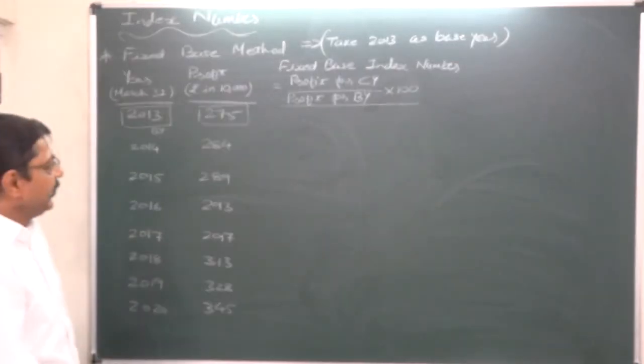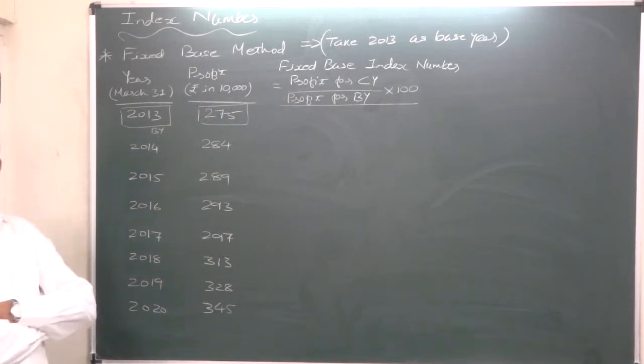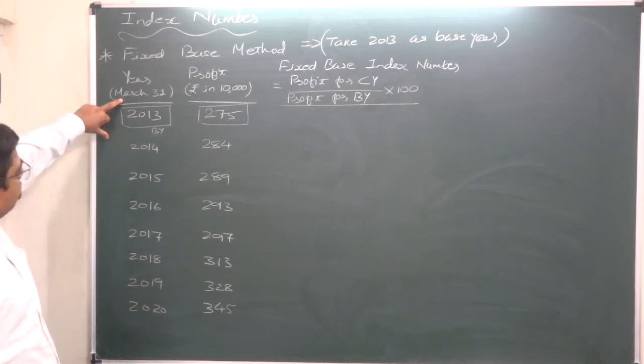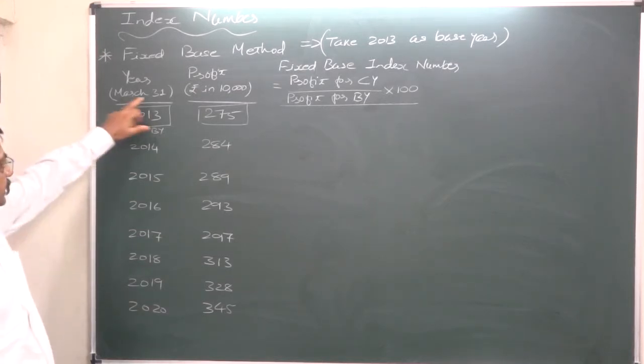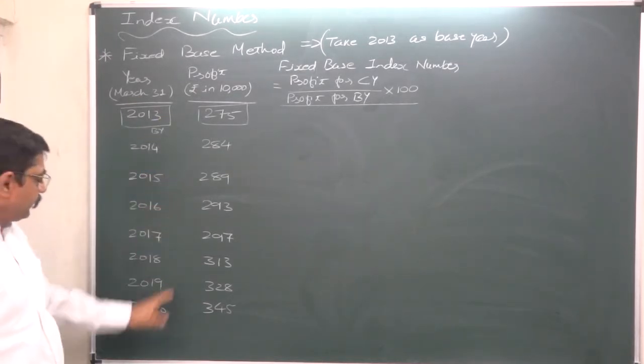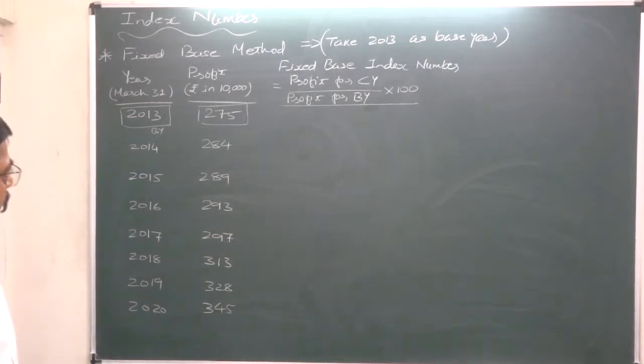In this example, we have data from the year 2013 to 2020, but mind well, 2020 is not over. These are the years ending 31st March - that means 31st March 2013, 2014, 2015, and 31st March 2020.